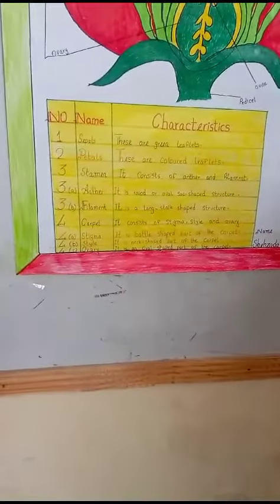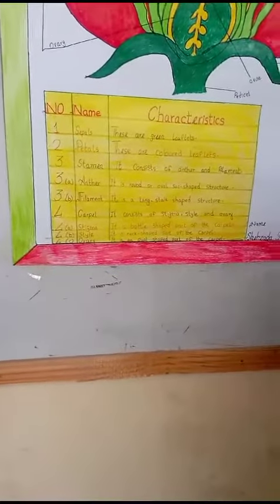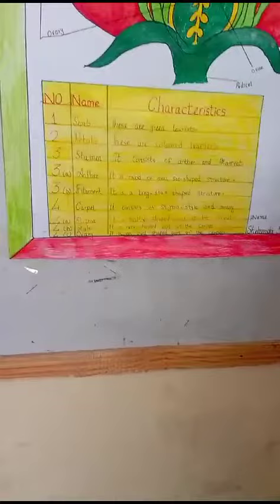Part A is the anther. It is a round or ovary-shaped structure. Part B is the filament. It is a long, style-shaped structure.